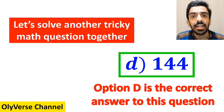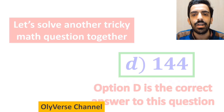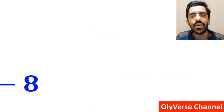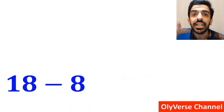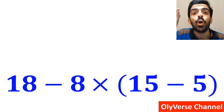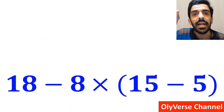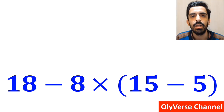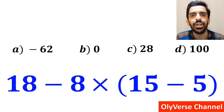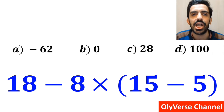Now let's solve another tricky math question together. What is the value of the expression 18 minus 8 times open parenthesis 15 minus 5 close parenthesis? Which option do you think is the correct answer to this question?